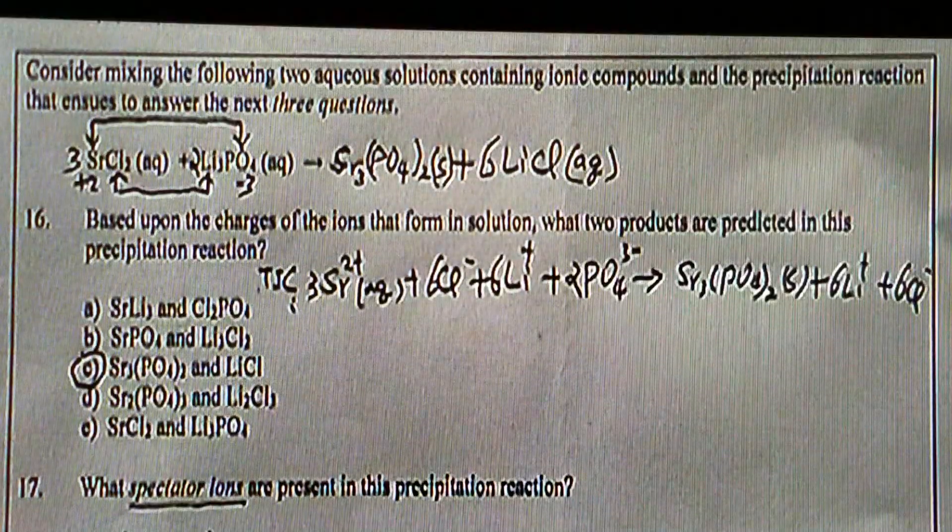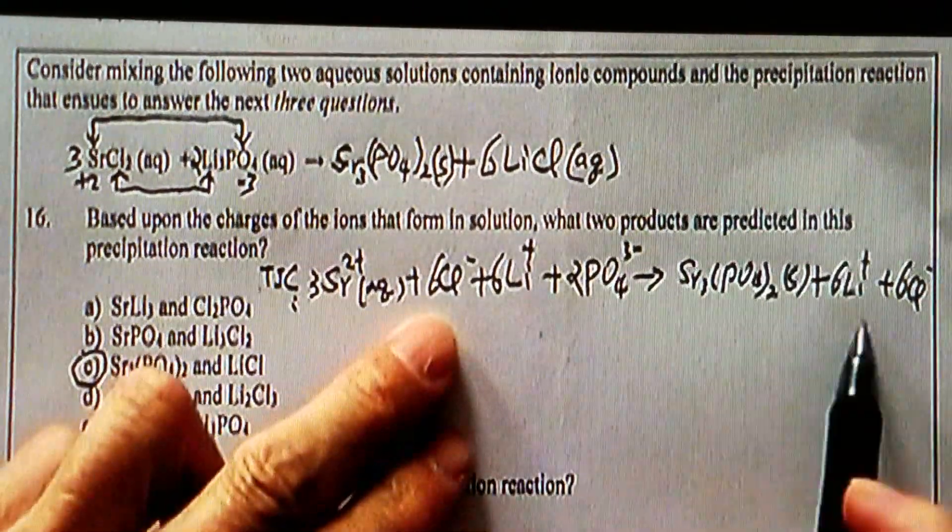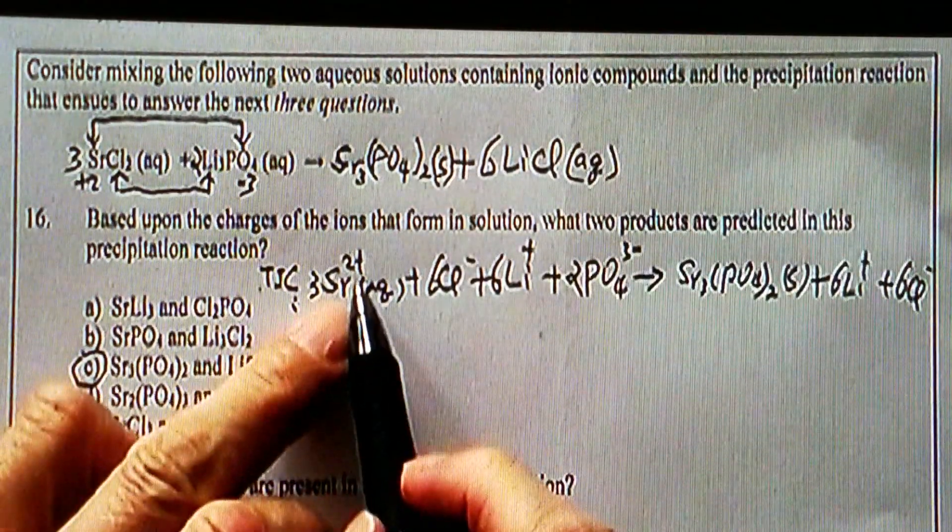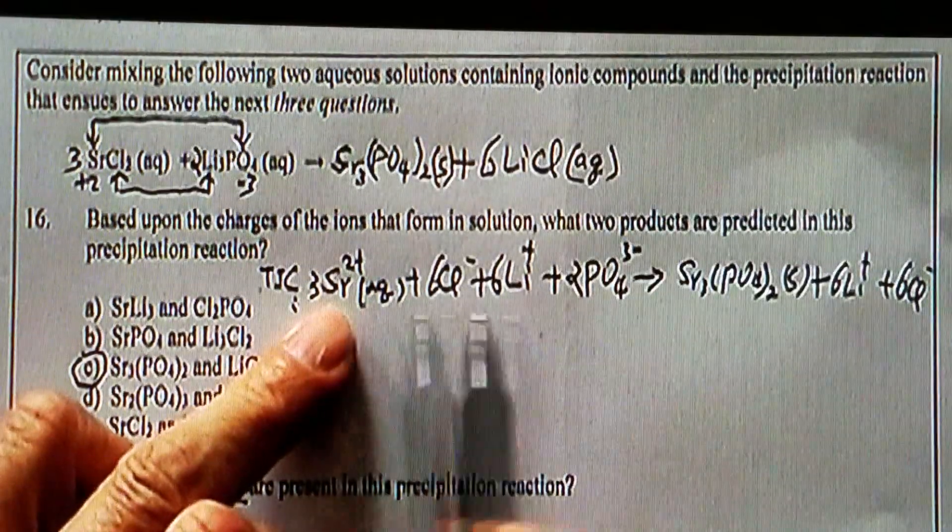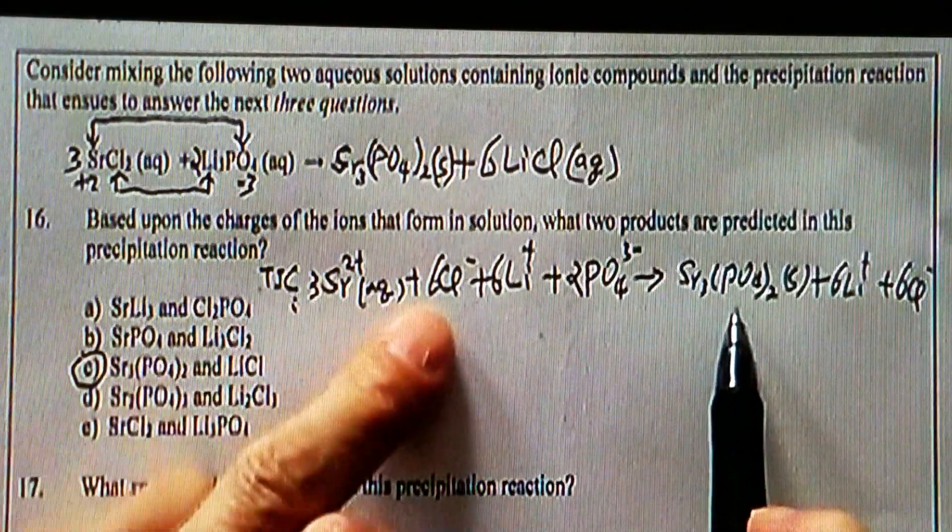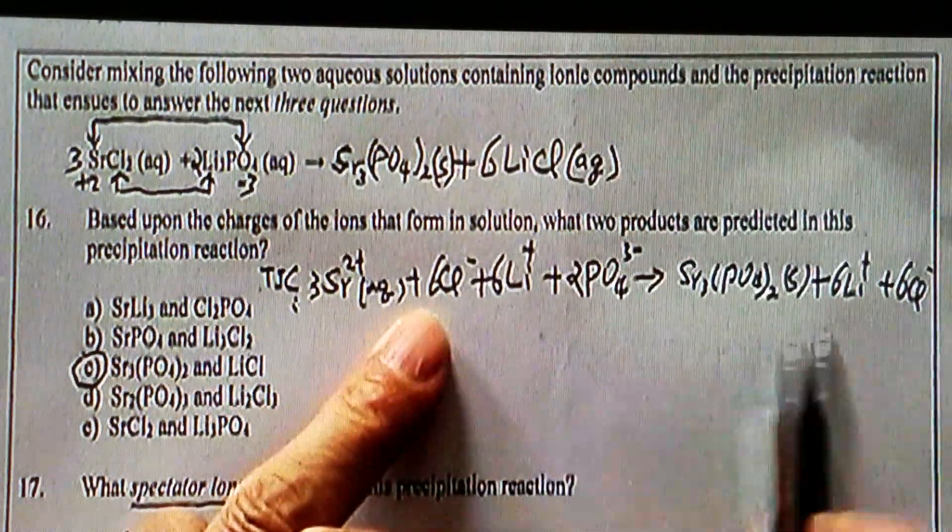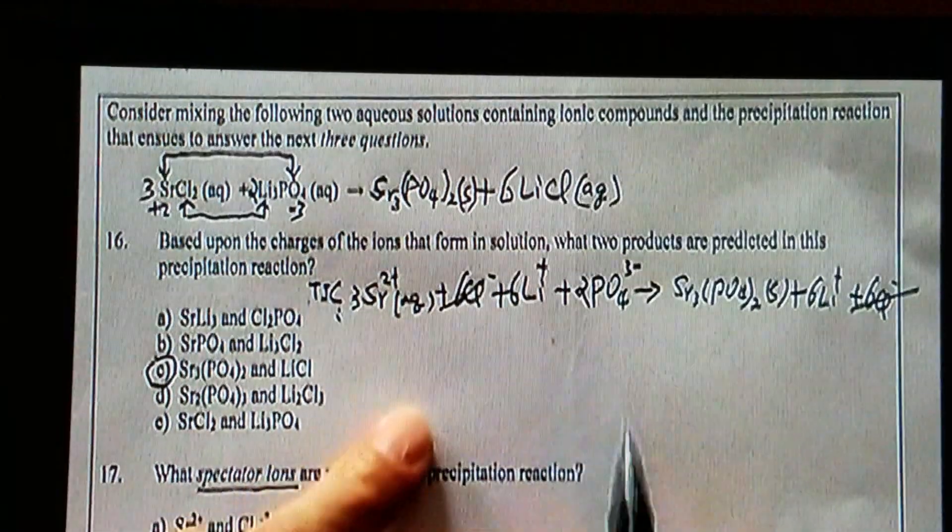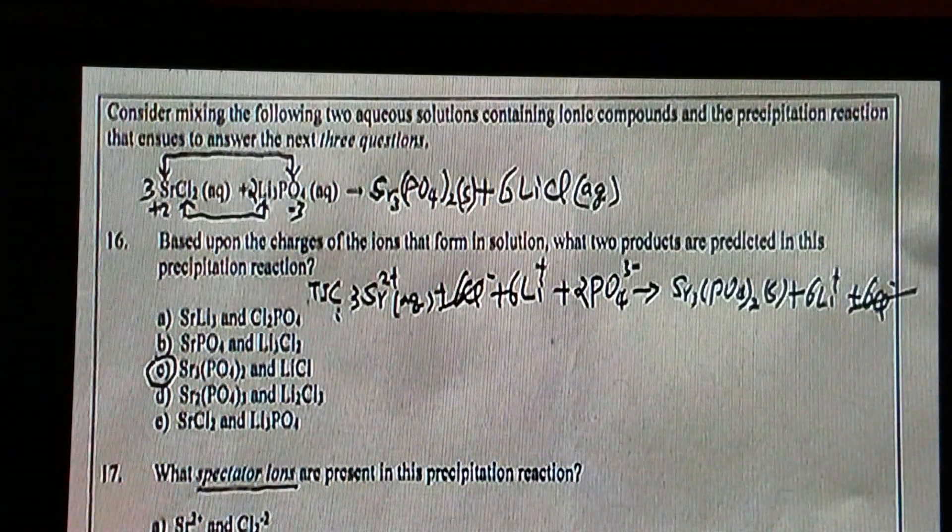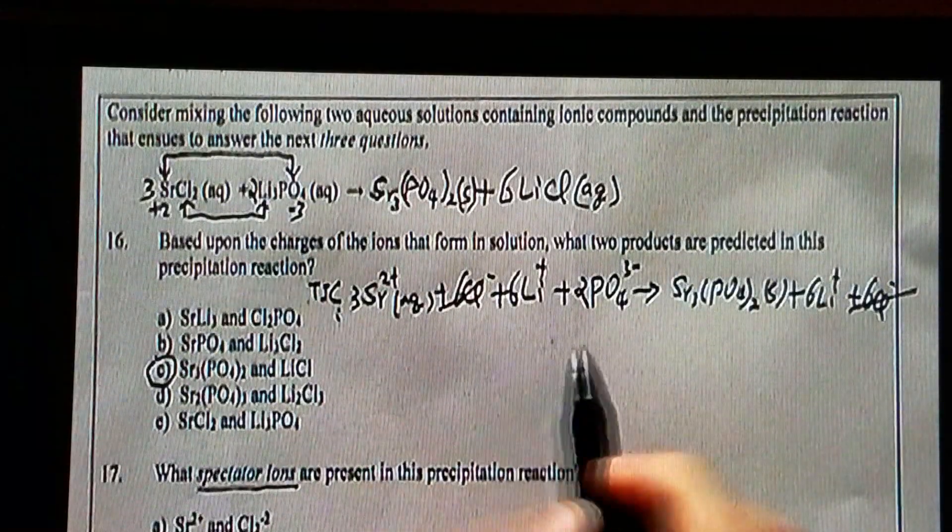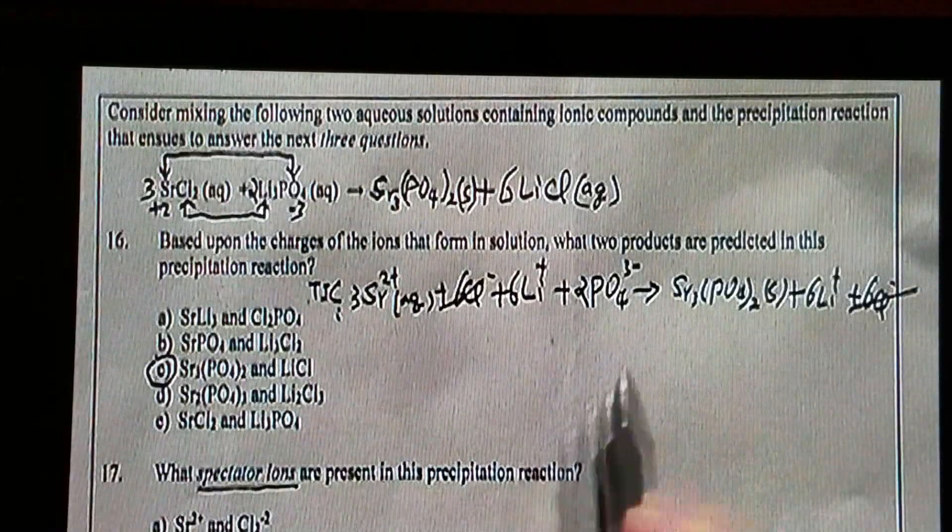So now, what are the spectator ions? Spectator ions are the ones that appear on both sides. Let's see Sr²⁺ on the left-hand side stays as a free ion. On the right-hand side, no, we cannot do anything with that. Chloride, six chloride on the left-hand side, six on the right-hand side. That's one of the spectator ions.